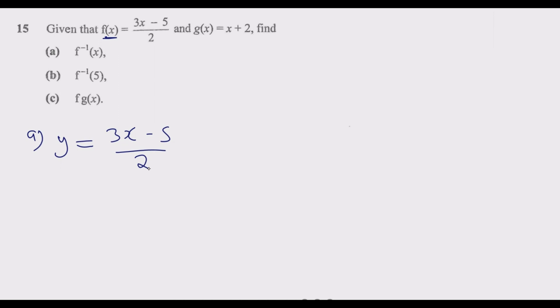Then the next step is to make x the subject of the formula. So what we do is this is over 1, then we cross multiply. So now it becomes 2 times y, which is 2y = 3x - 5.